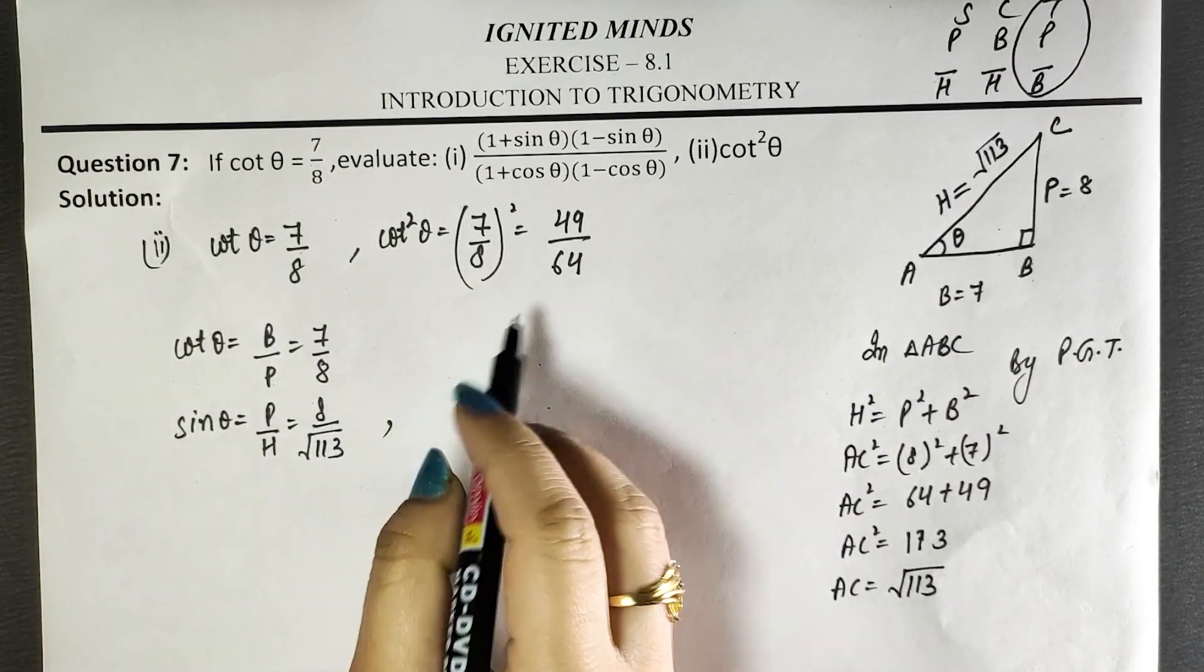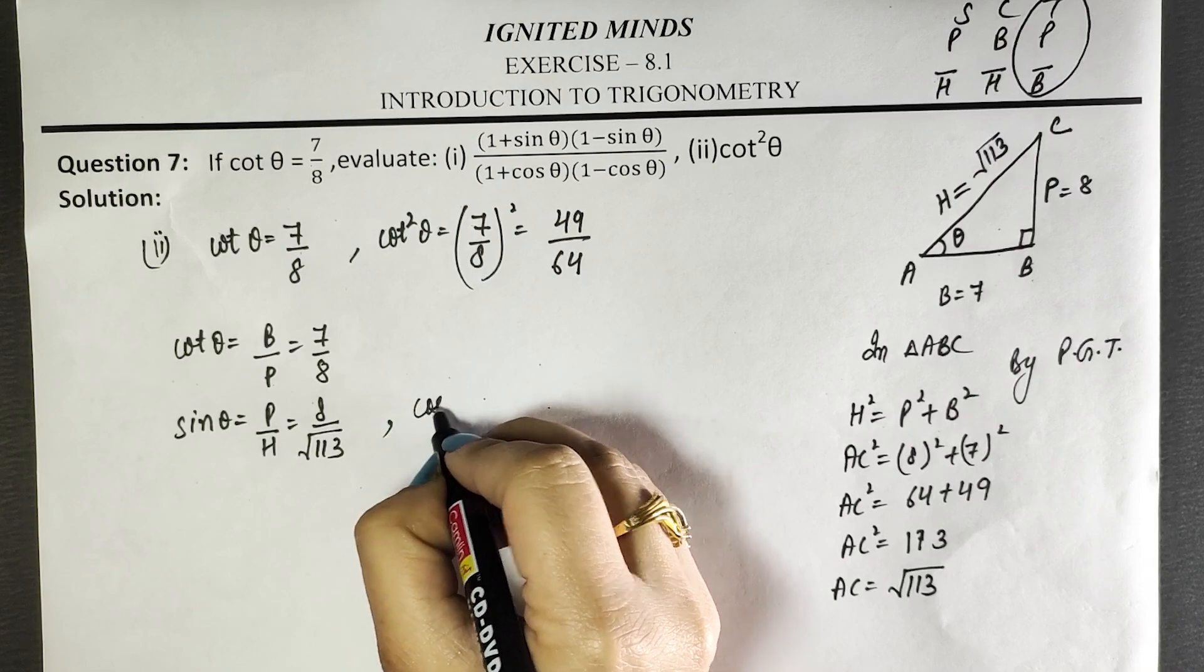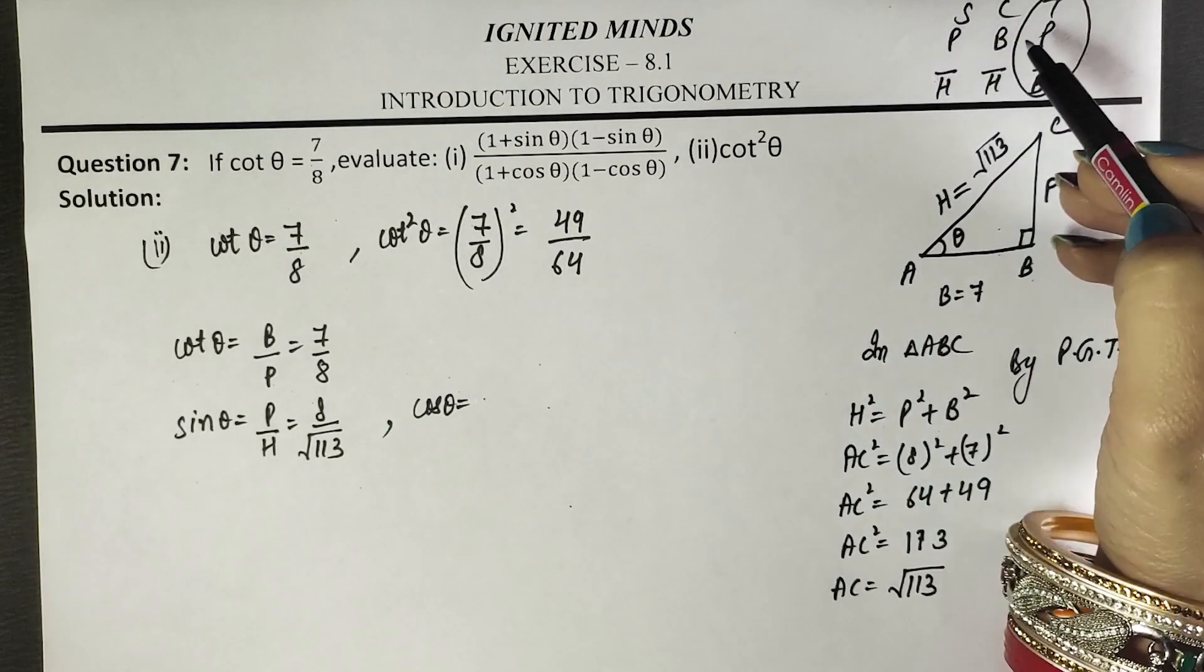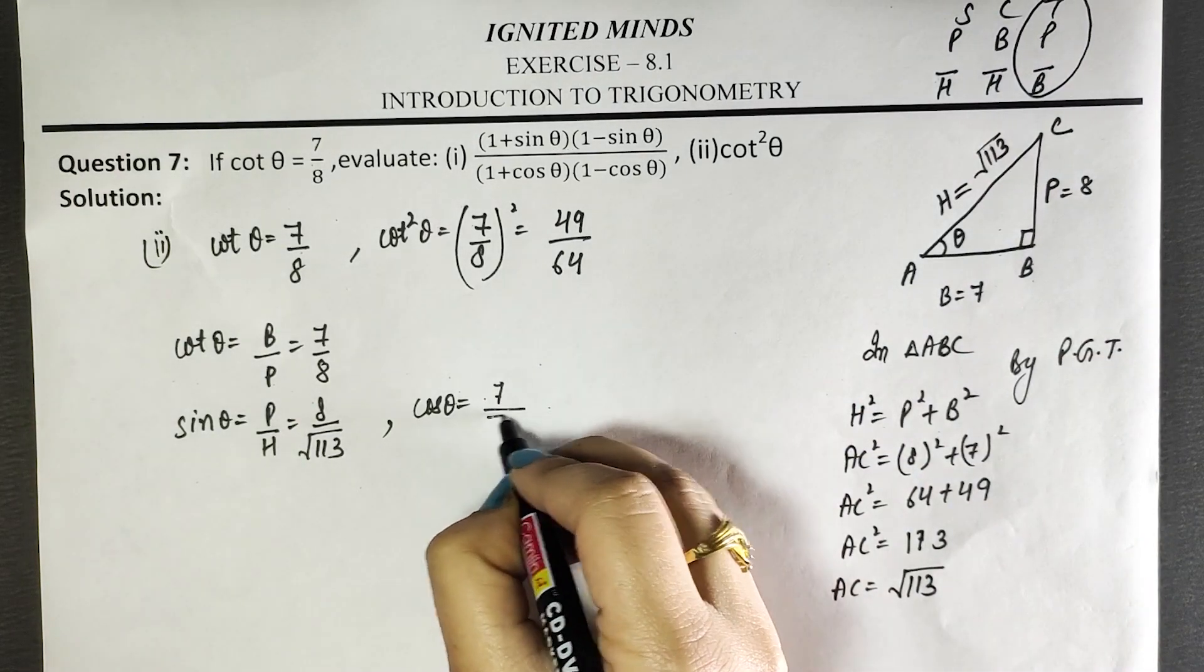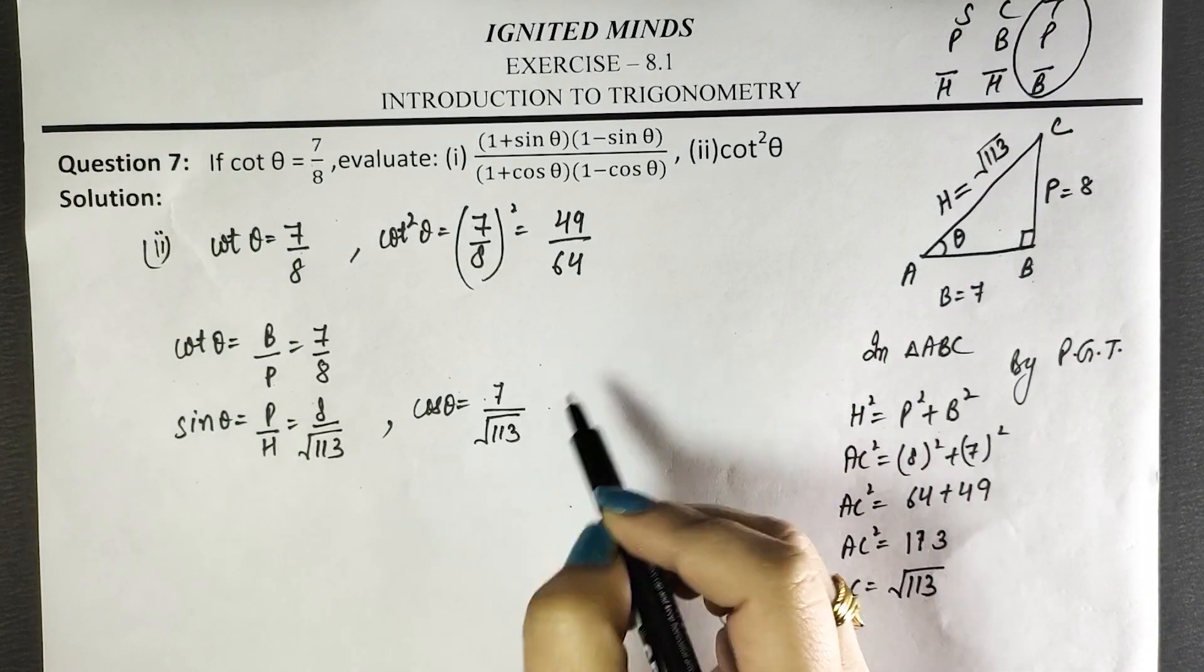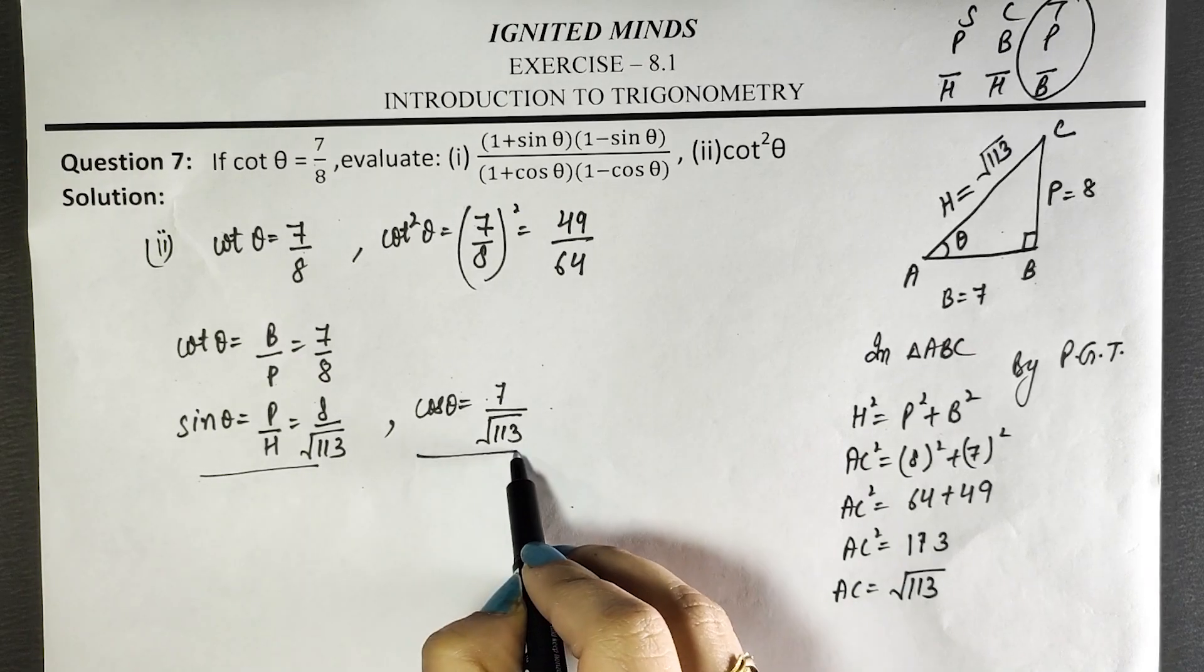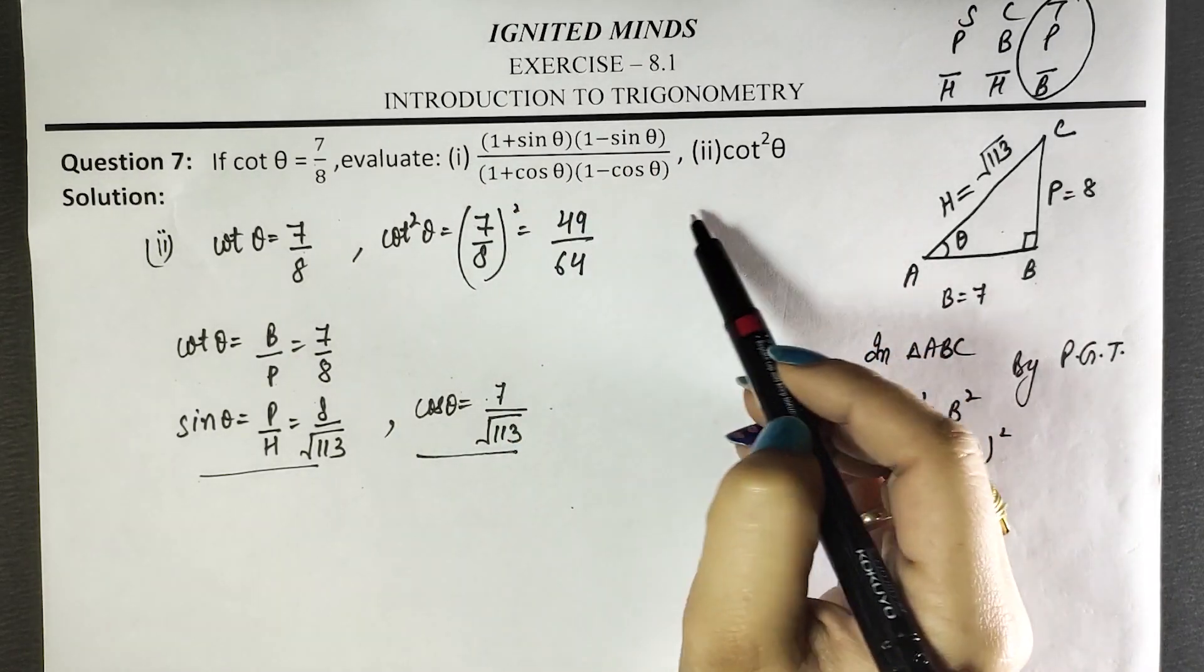Similarly, we will find cos θ value. Cos θ is base by hypotenuse: base 7 and hypotenuse root 113. Now we will put this and solve.